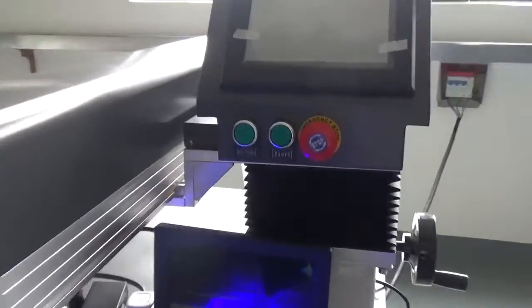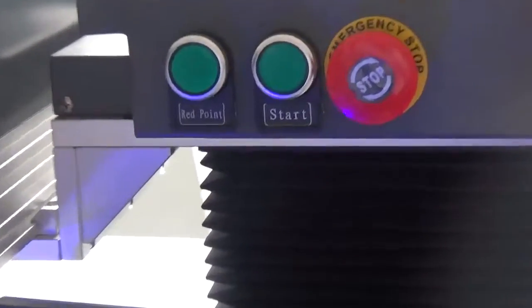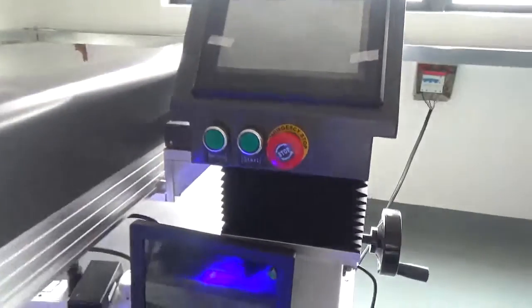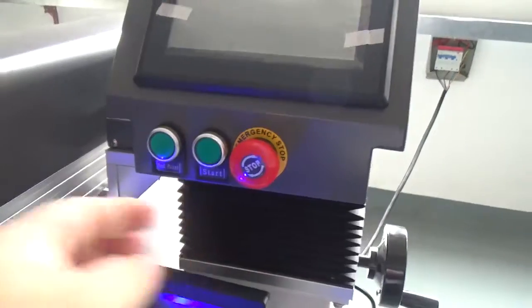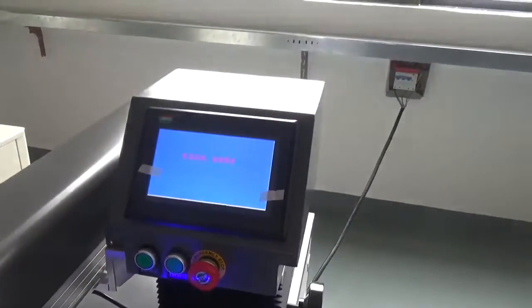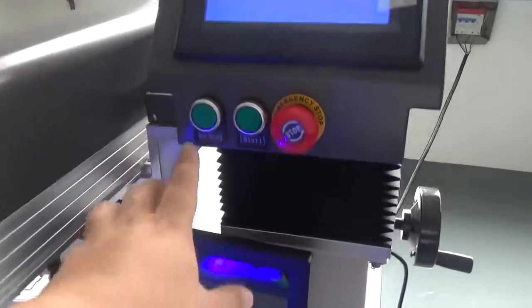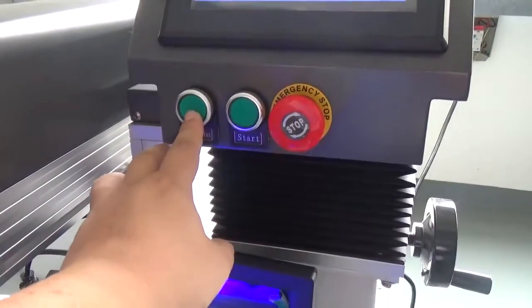Okay, now you can see the red point and stop button. First, press the start button. The machine works okay. Then turn on the red point button.